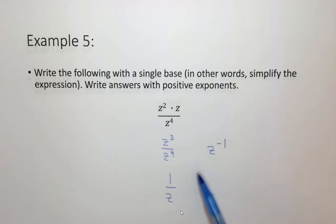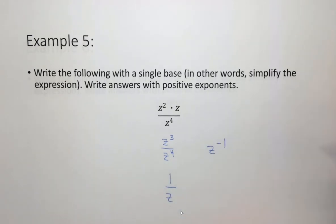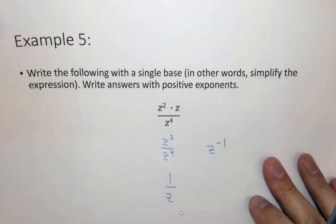If this were z to the minus 10 it'd be 1 over z to the tenth. So that's how you deal with these negative exponents because it asks us to write our answers with positive exponents which means in some cases like this one we do need to use fractions.